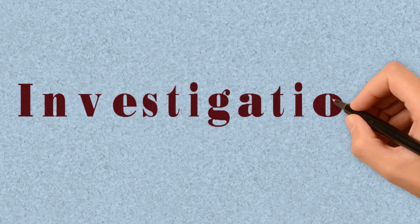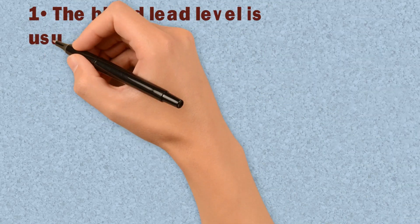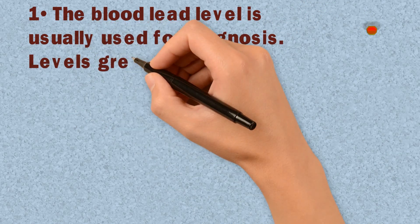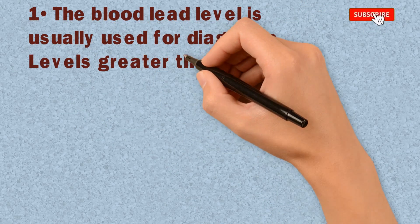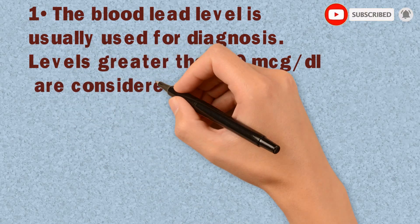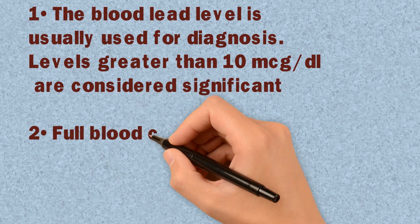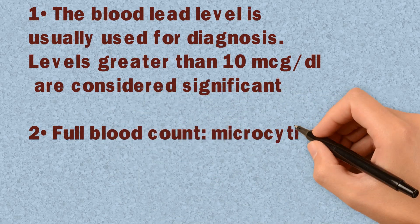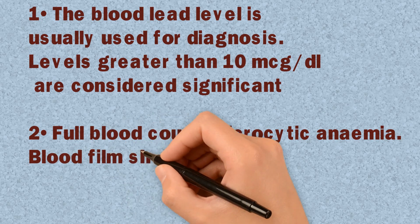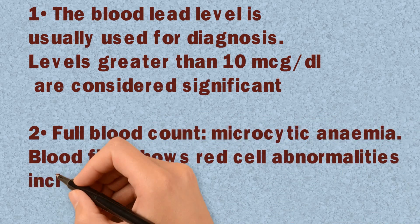For investigations, the blood lead level is usually used for diagnosis. Levels greater than 10 micrograms per deciliter are considered significant. A full blood count will show microcytic anemia, and the blood film shows red cell abnormalities.